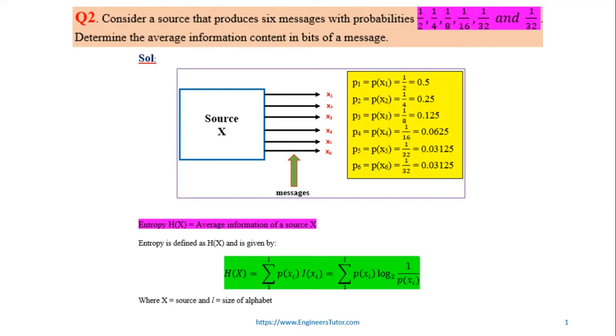Question number two: consider a source that produces six messages with some probabilities. Determine the average information content. This average information is also known as entropy. Average information is nothing but entropy of the source.